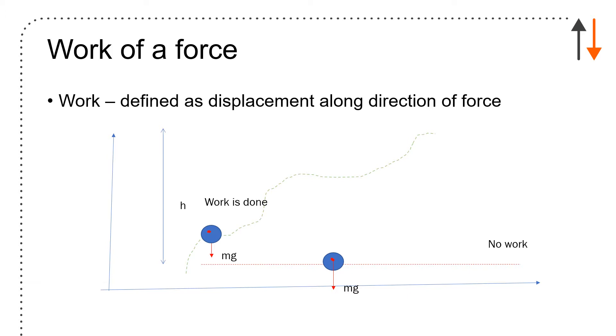In this case, because the particle is traveling horizontally and the force is acting vertically, it's at 90 degrees and it's not in the direction of the displacement. So work is defined as a displacement along the direction of force.